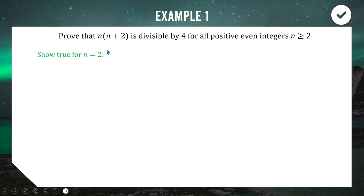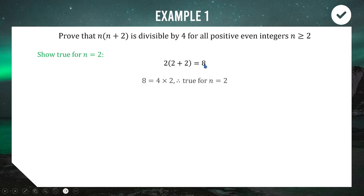When we substitute n equals two into our expression we get two multiplied by (two plus two), so two times four, which gives us eight. And eight equals four times two, so eight is divisible by four. The initial case when n equals two is confirmed.